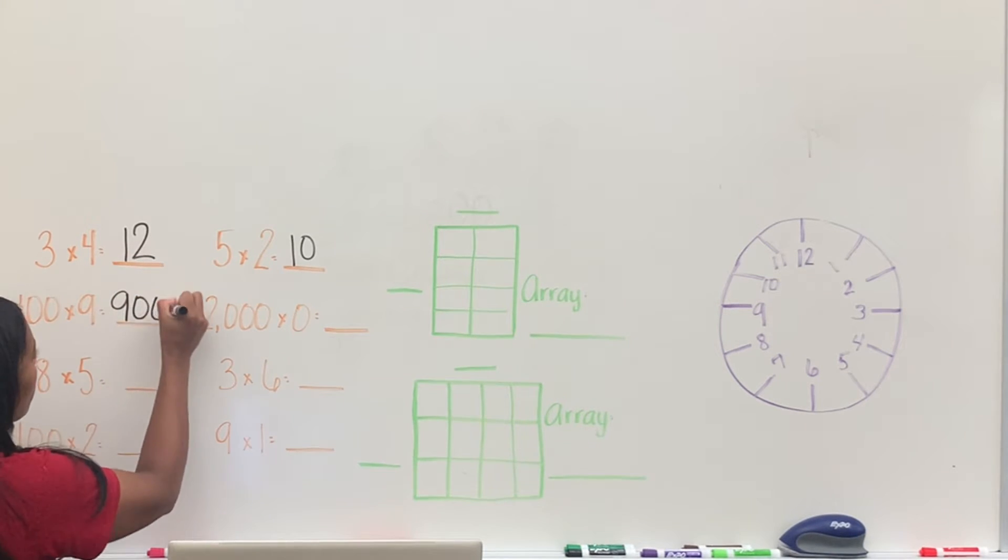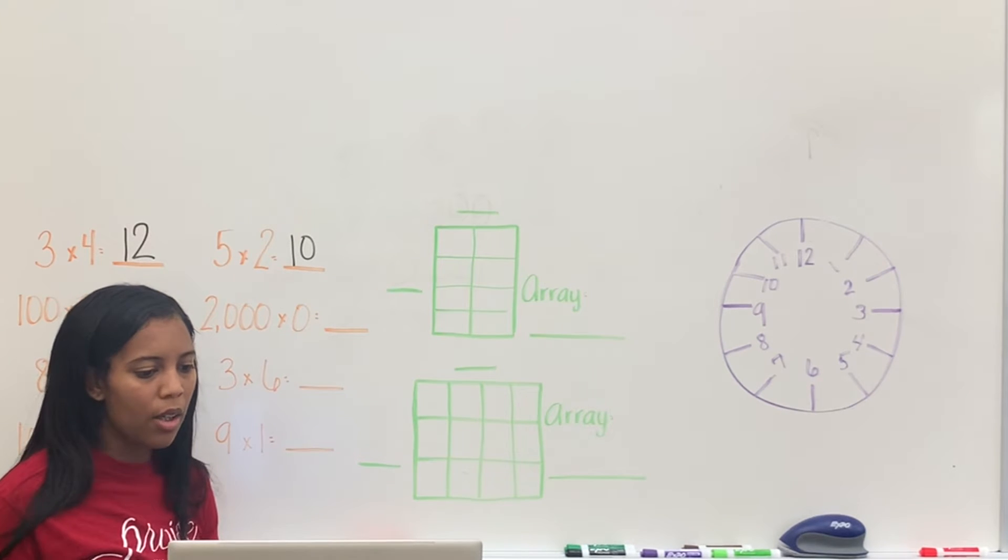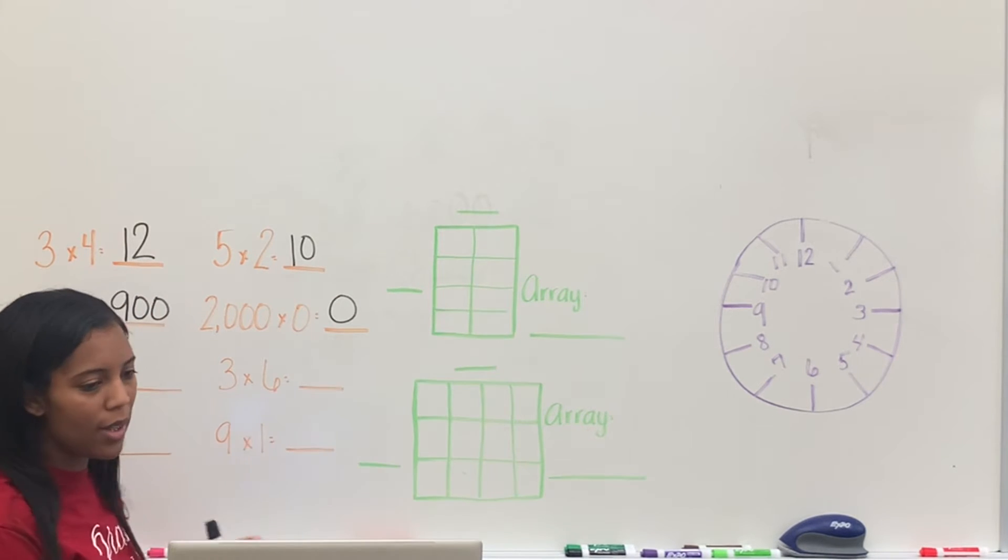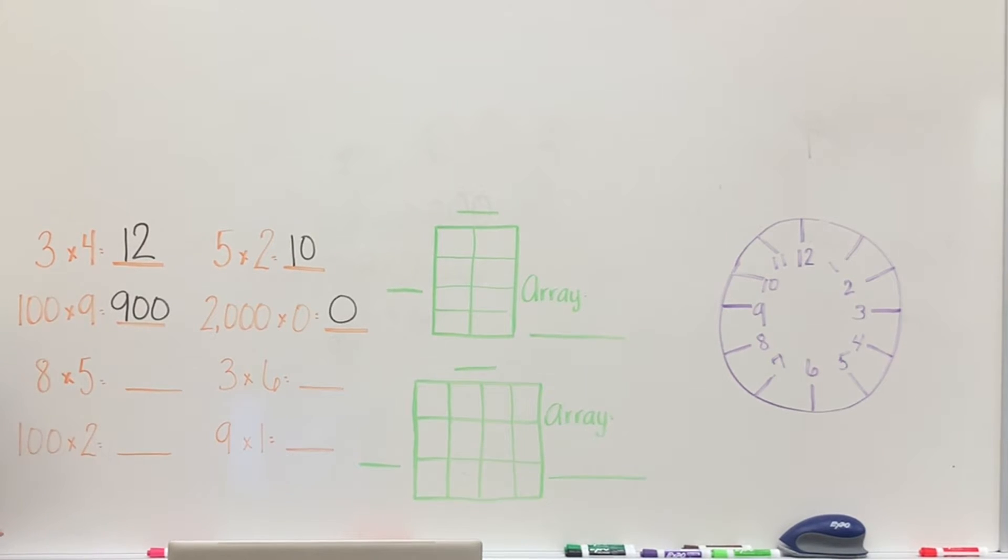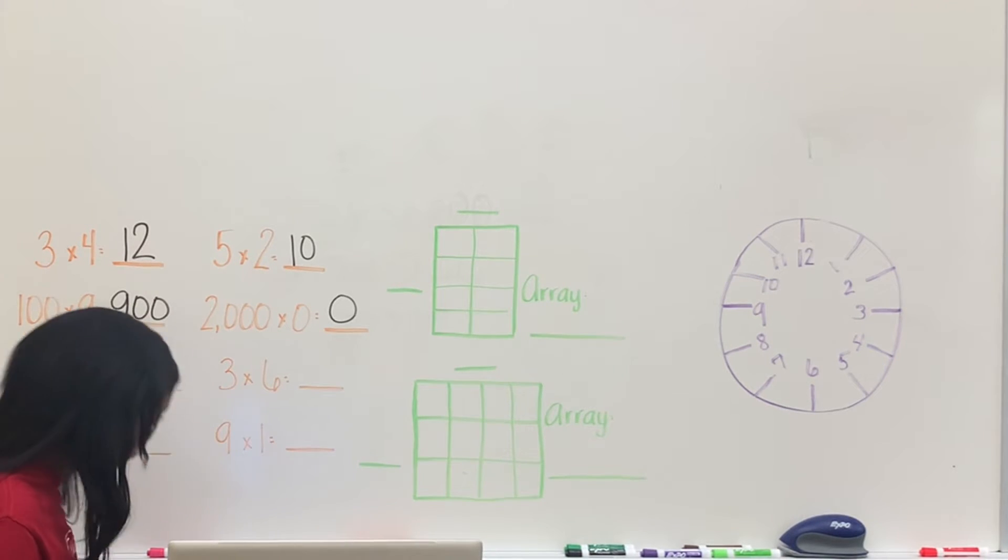2,000 times 0. 2,000 times 0. Jordan? 0. Remember, anything times 0 is always 0. 8 times 5. 8 times 5. Jasmine? 8 times 5 equals 14. So it's just like counting by 5, 8 times. 40. 40.